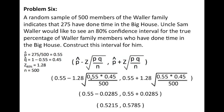The first thing you need to do is solve this: 1.28 times the square root of 0.55 times 0.45 over 500. You would multiply 0.55 times 0.45. Then you would divide that amount by 500. Then you would take a square root and multiply it by 1.28. And that gives us 0.55 minus 0.0285, 0.55 plus 0.0285.